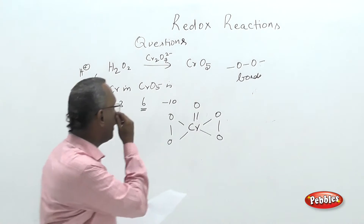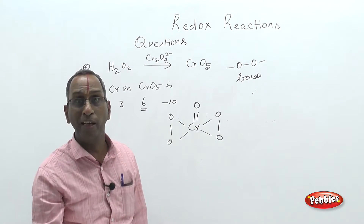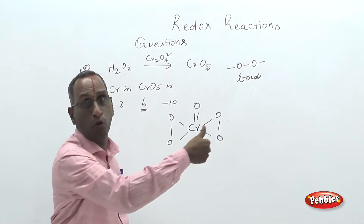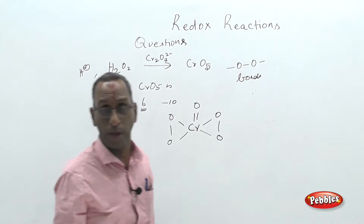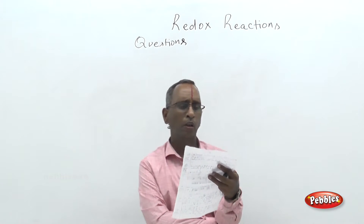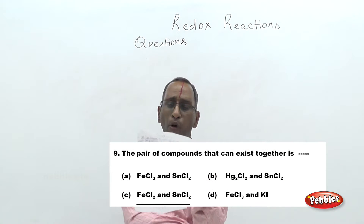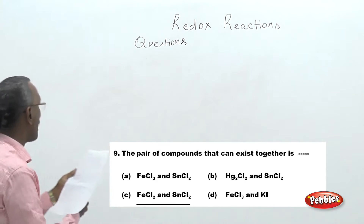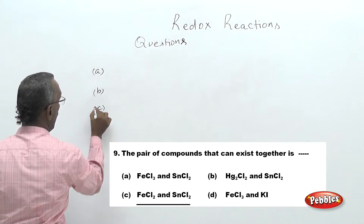This finishes the treatment. This question is a collective arrangement of D-block elements as well as redox equations. Chromium is the D-block element, and chromium pentoxide is its compound. Now the next question reads: the pair of compounds that can exist together is — with 4 pairs given. Let us write the first 4 pairs as A, B, C, and D.